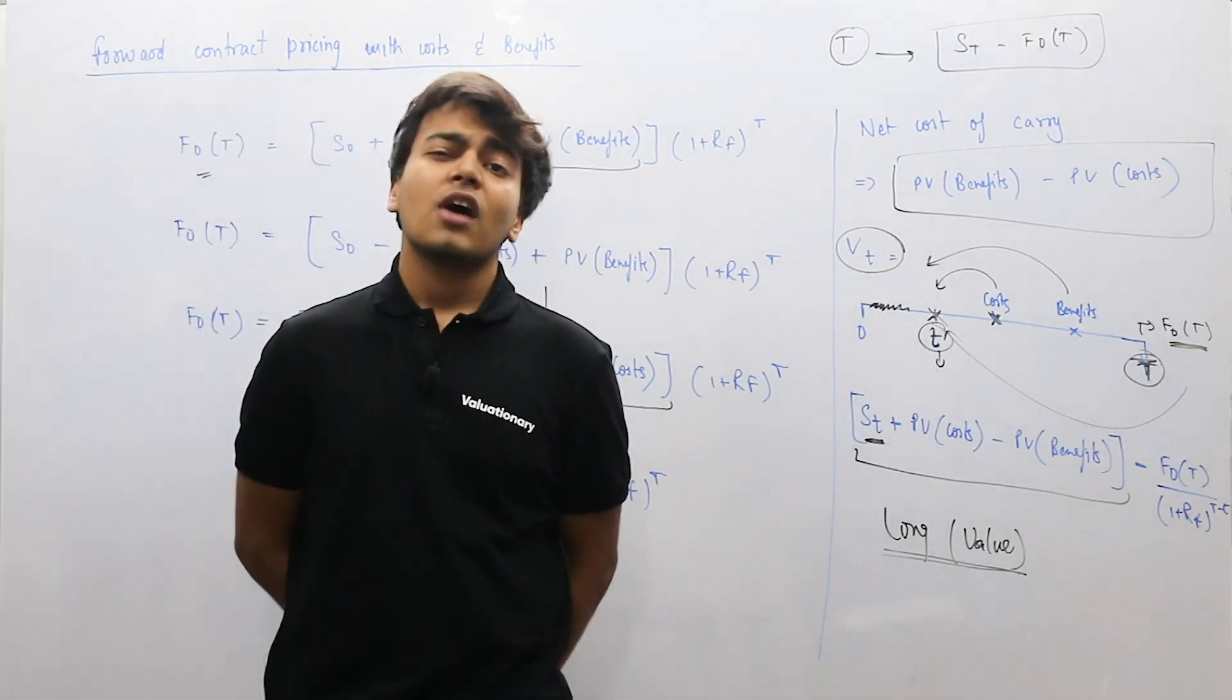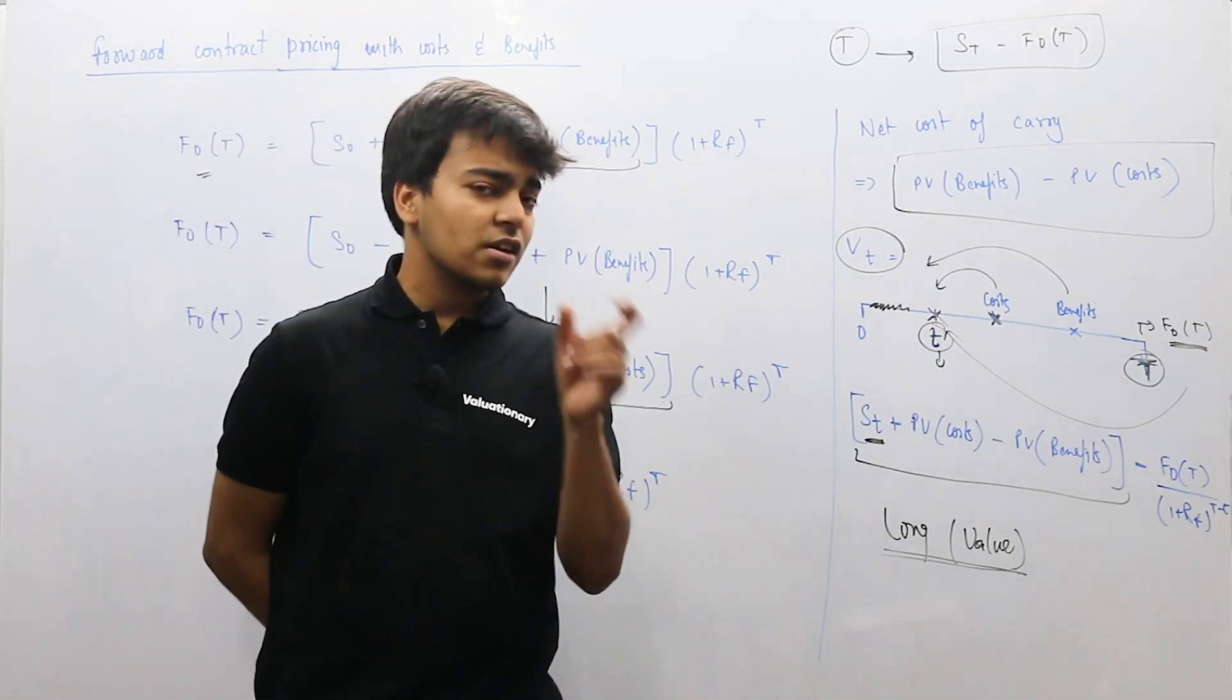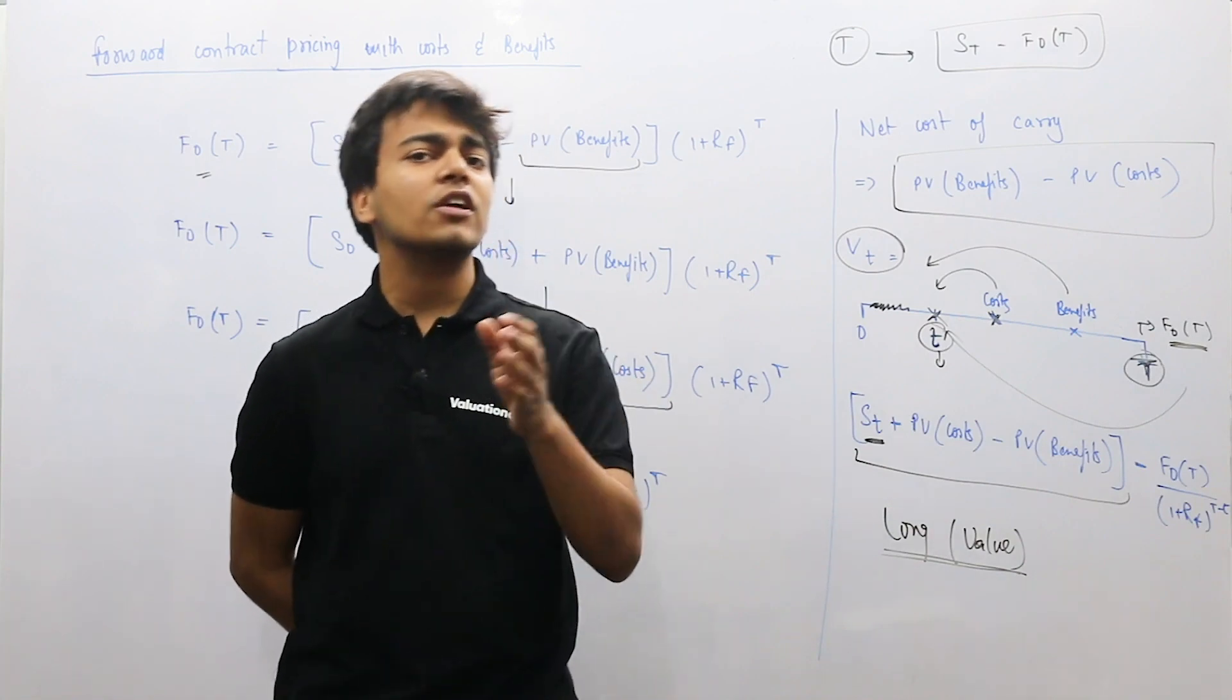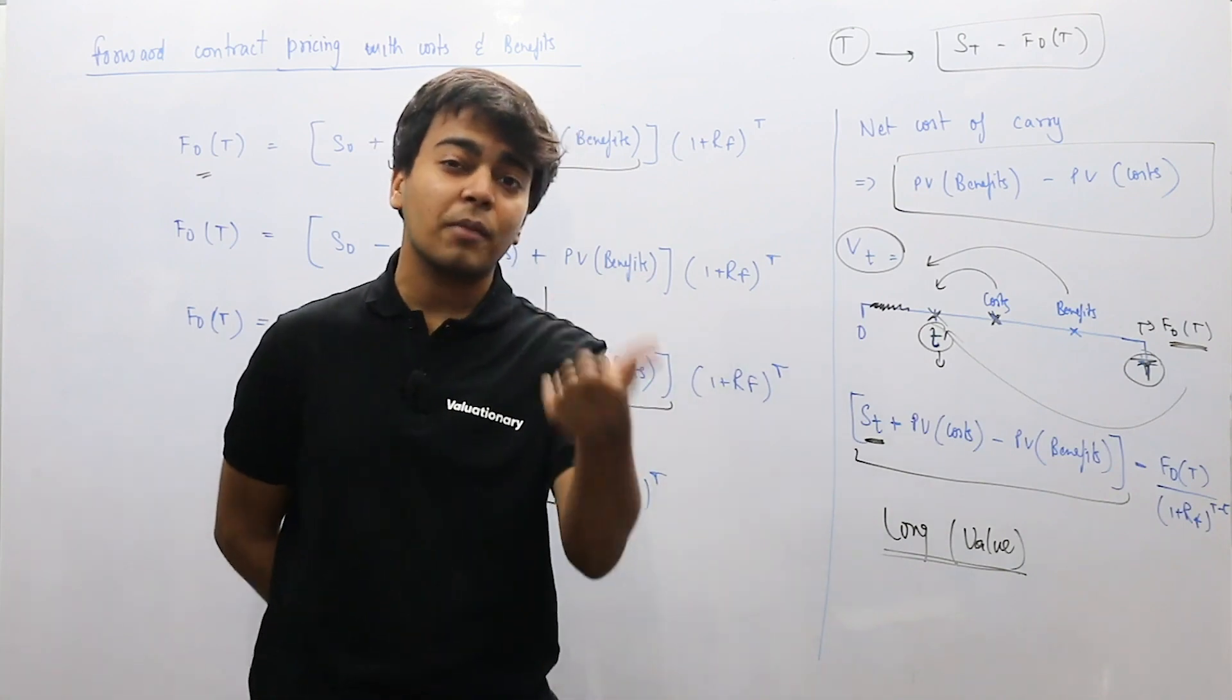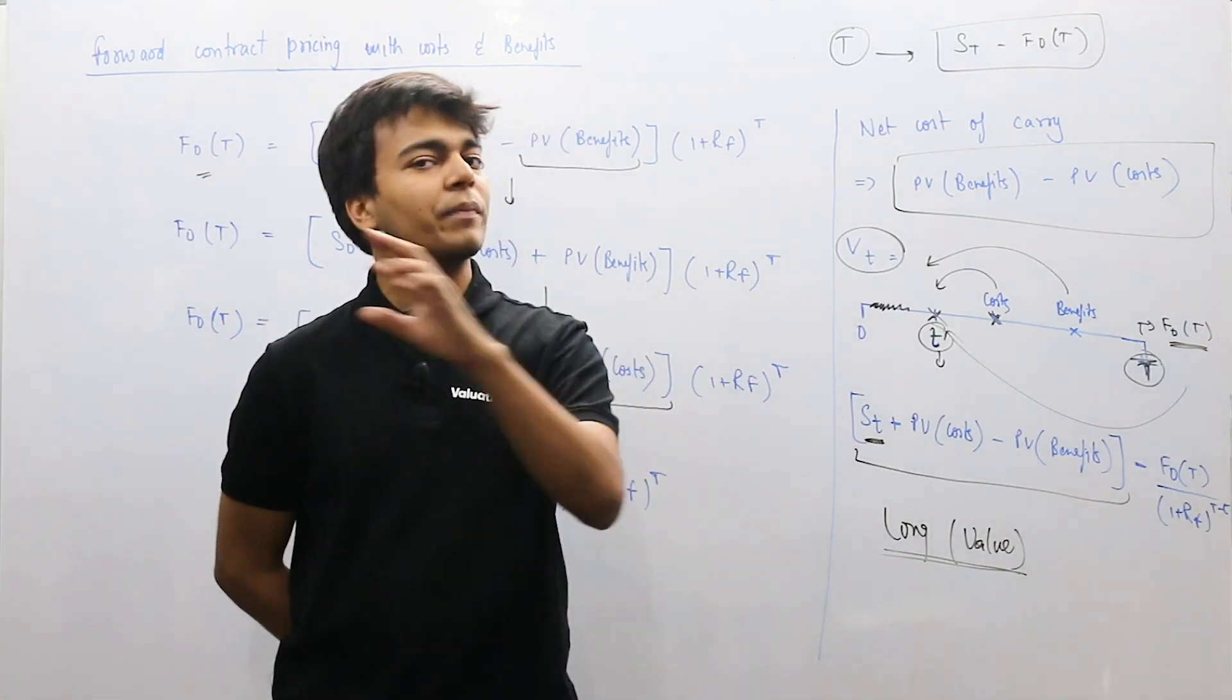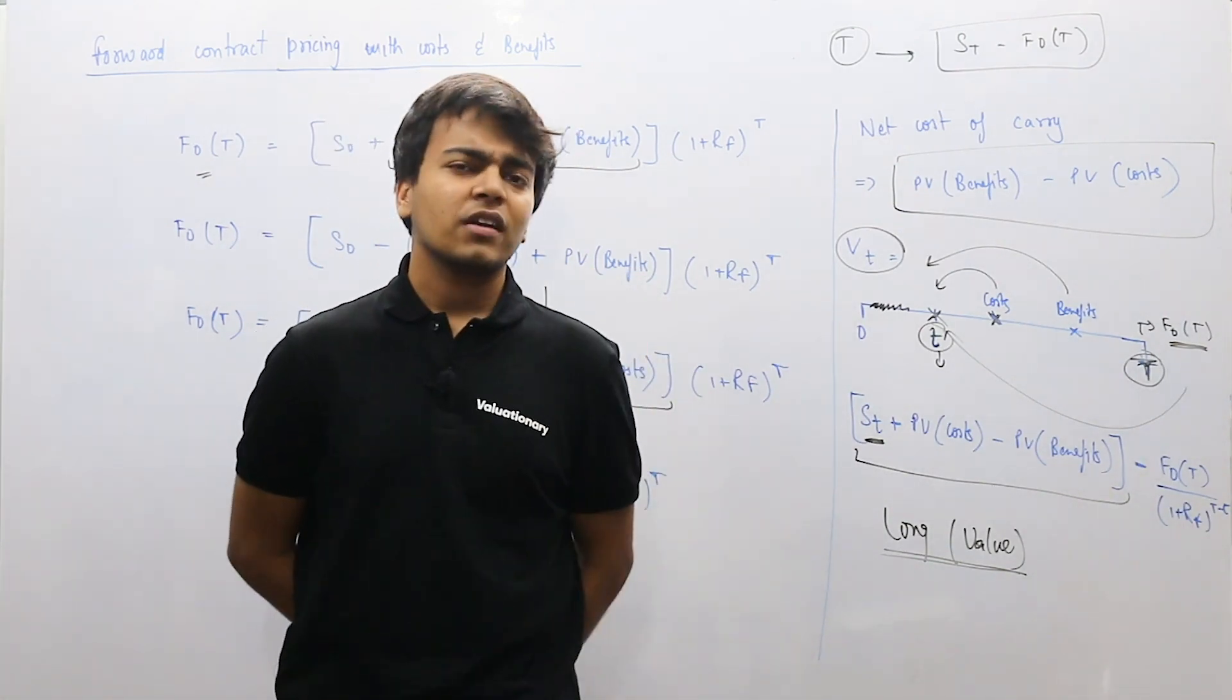So this is how your forward contracts are priced. The next thing we'll see is, at certain time periods, there are differences between the forward price and the future price. So when and why these differences between forward price and future price occur, we will consider next. That would be the next topic.